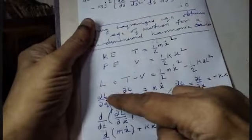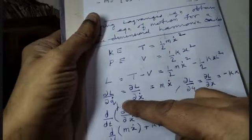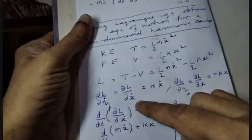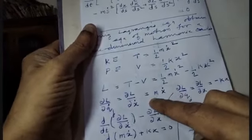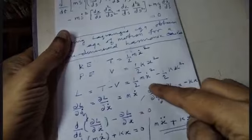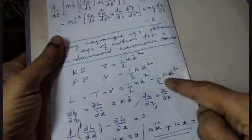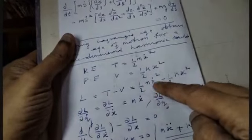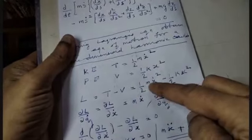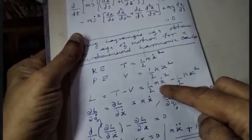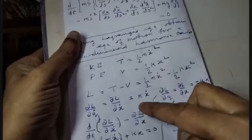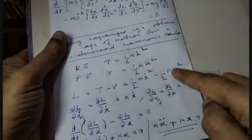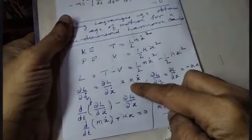Computing ∂L/∂x-dot: differentiating L with respect to x-dot, the potential energy term is constant in x-dot, and we get one-half m times 2x-dot, so ∂L/∂x-dot equals mx-dot.